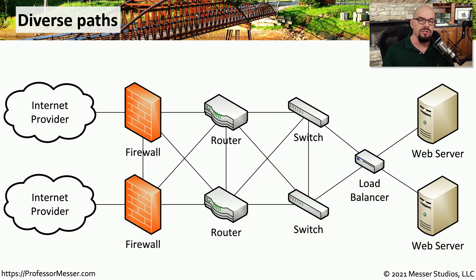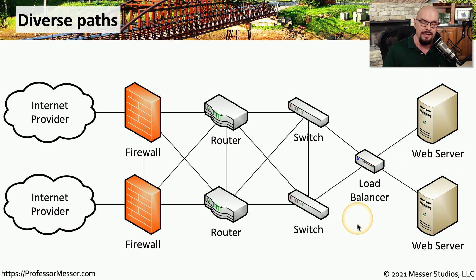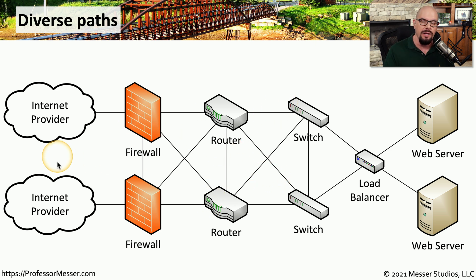Of course, diverse paths don't have to be just to internet service providers — they could be within our own internal network as well. Here's a network that has multiple internet providers, diverse paths into separate firewalls, which also have diverse routers and diverse switches. In this case we're connecting to a single load balancer, but we could also engineer multiple load balancers, and ultimately we have multiple web servers to connect to. This means we could lose any one of these devices or links and still remain up and running because we have a diverse path to follow.